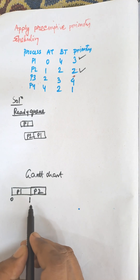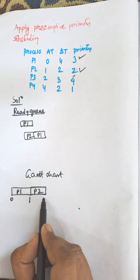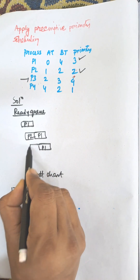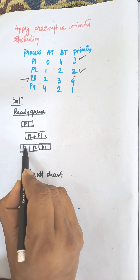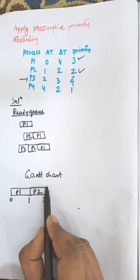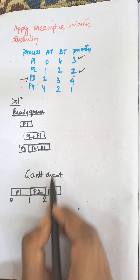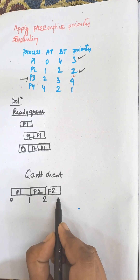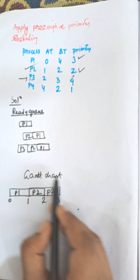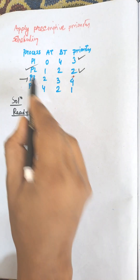P2 will be selected for execution and will execute up to the next process arrival. That is P3 arrives, so P1, P2, and then P3 arrived. But the priority of P3 is not better than the priority of P2, so P2 will continue its execution up to time 3, where P2 finishes its execution. Now P1 and P3 remain.